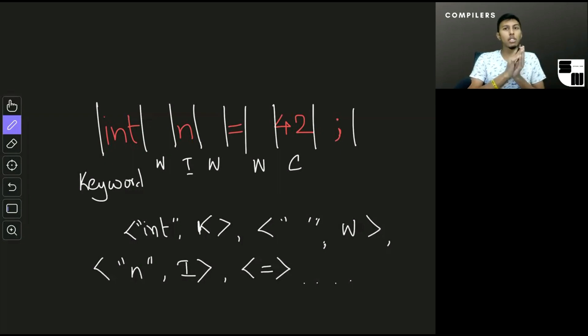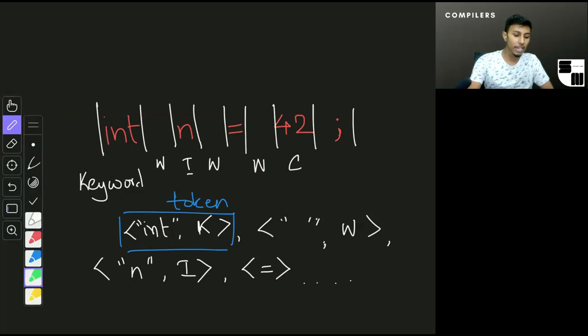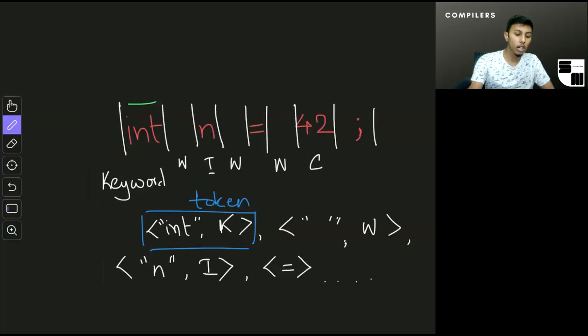All of the keyword, white space, identifier—all of those that I wrote—those are called token classes. What it identifies, this thing right here, this part, is called a lexeme.